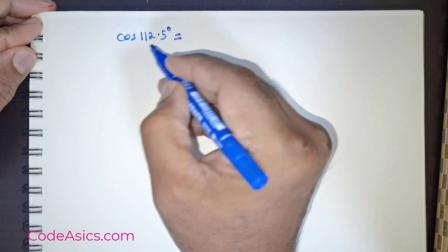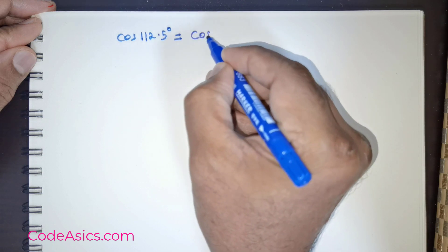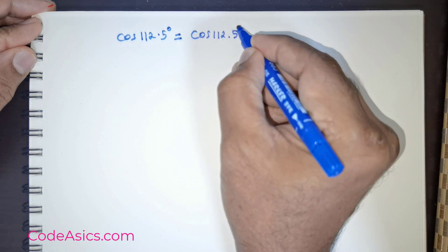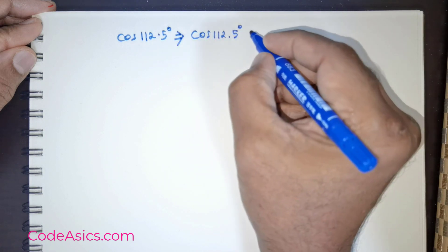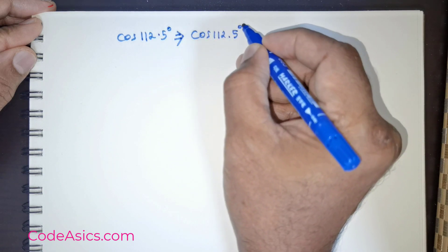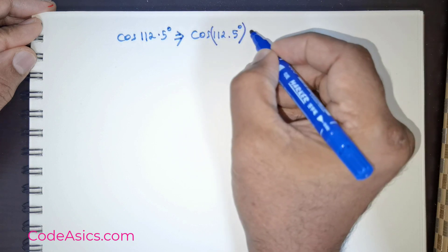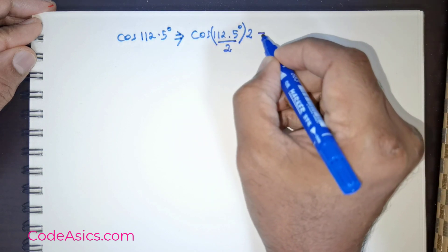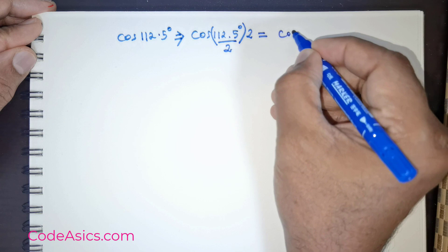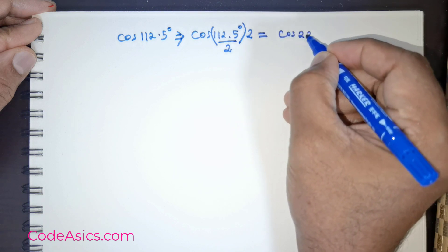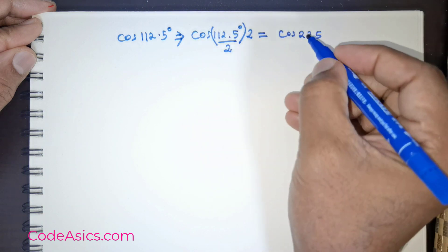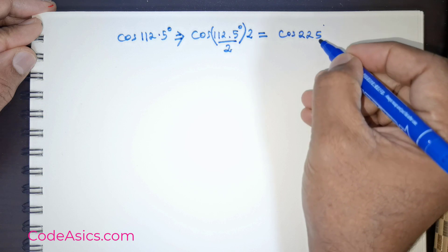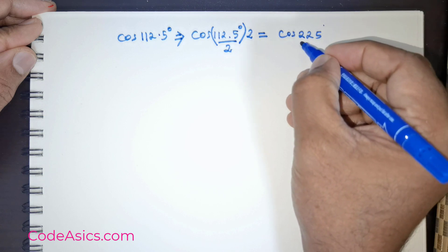What I would like to do is rewrite this degree, cos 112.5 degrees. This is what has been given. So I would like to rewrite this as multiplied by 2 and divided by 2. What happens here? This is going to be equal to cos 225 degrees divided by 2. When you multiply 112.5 by 2, you get 225 degrees.